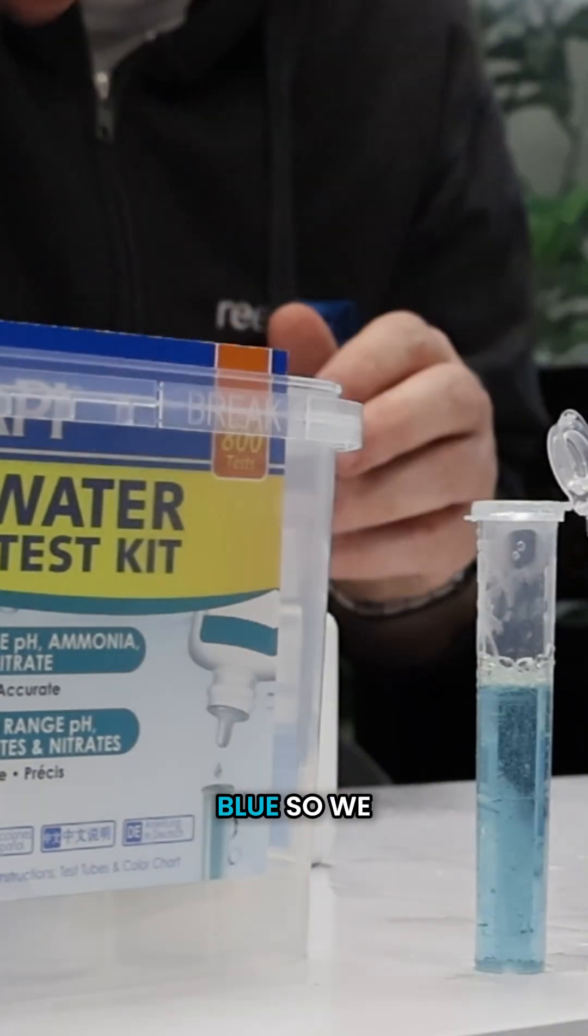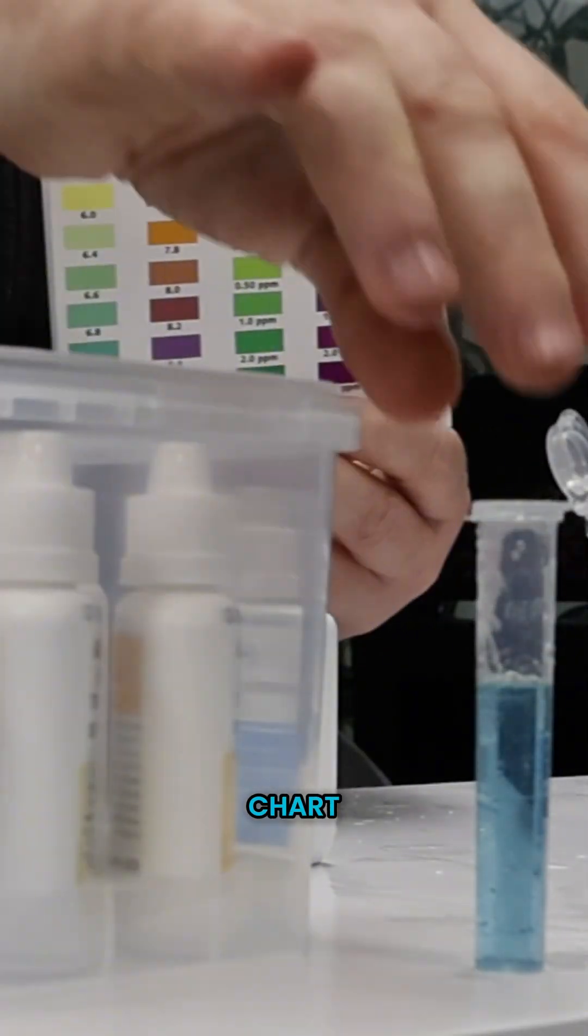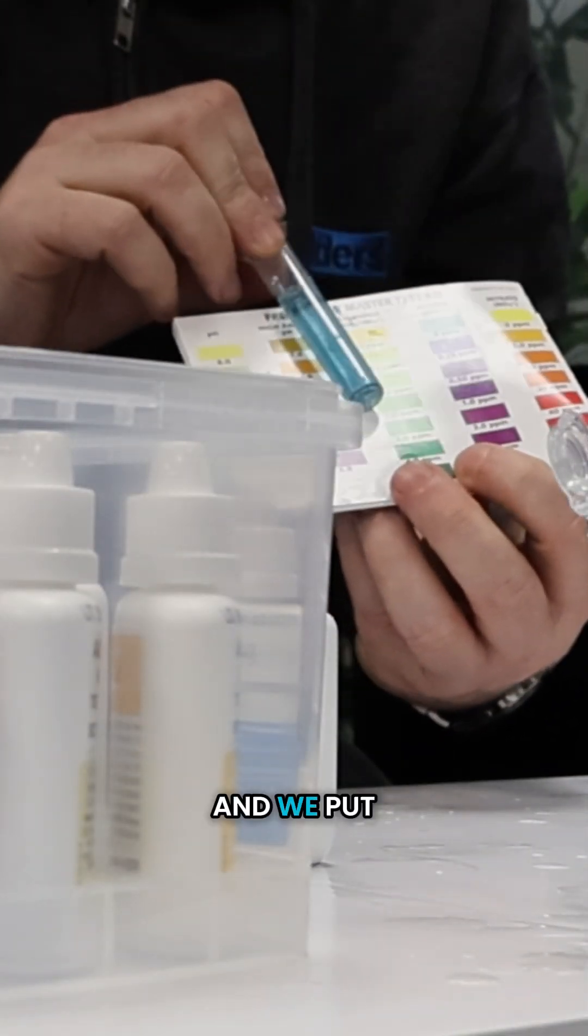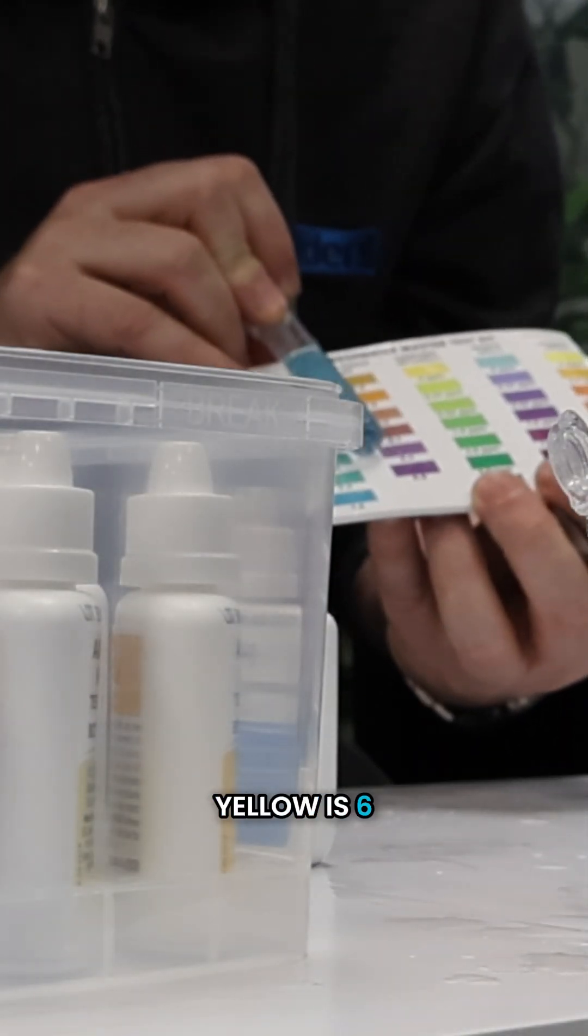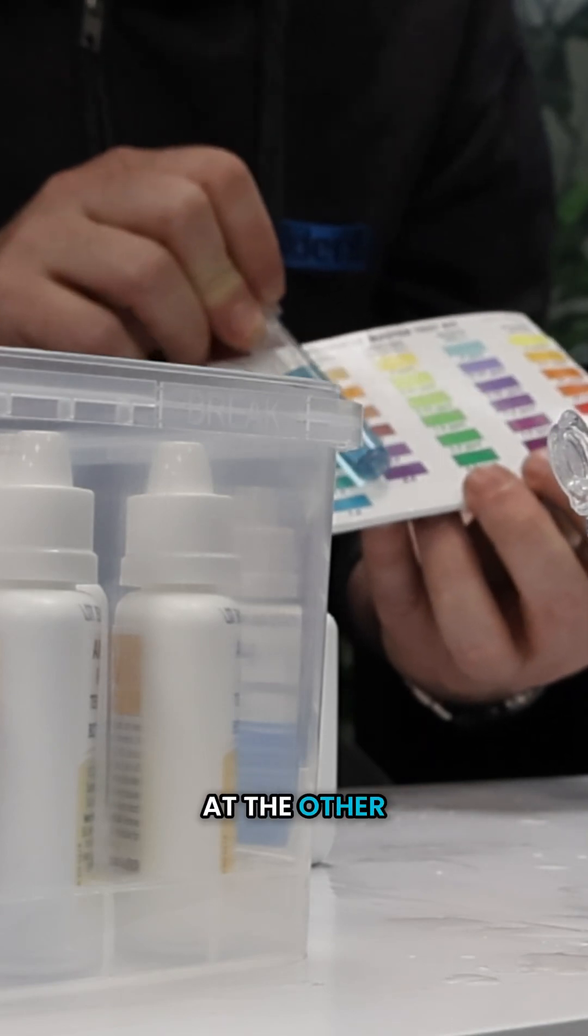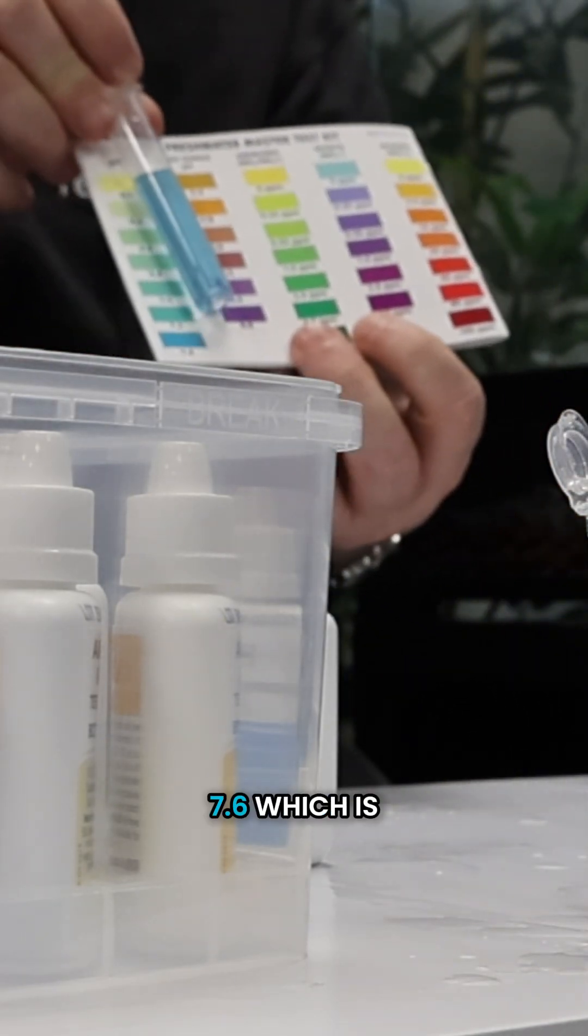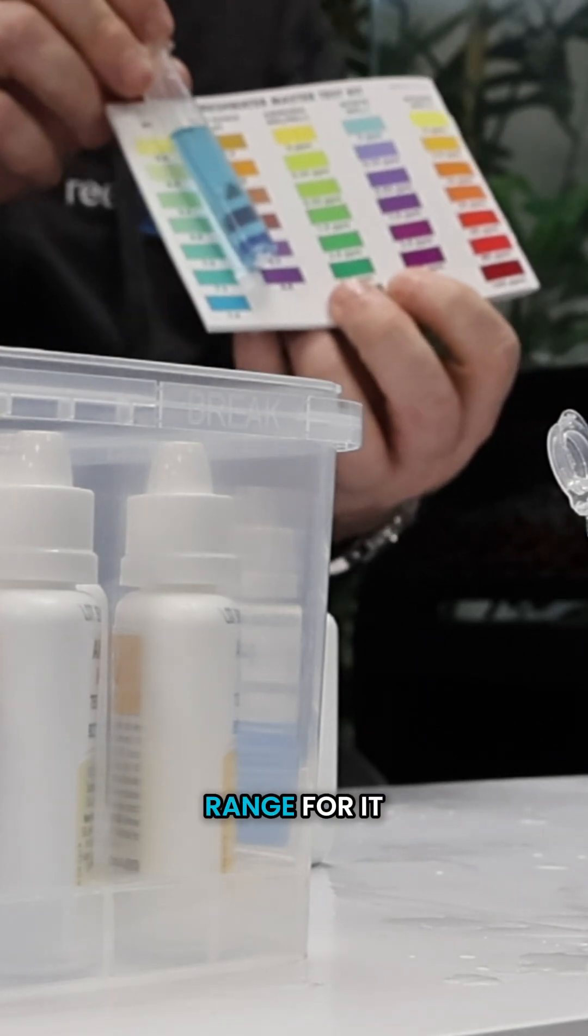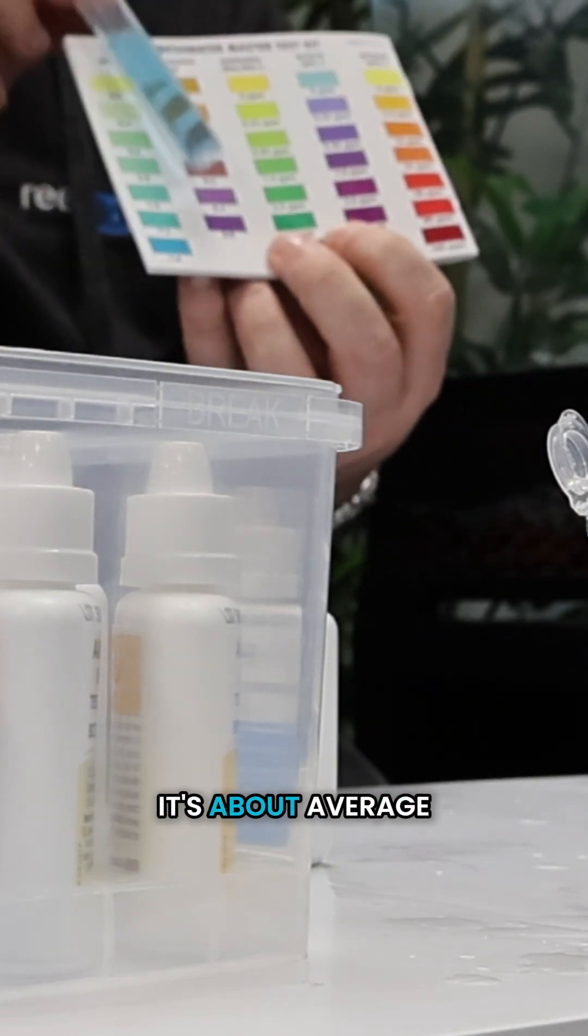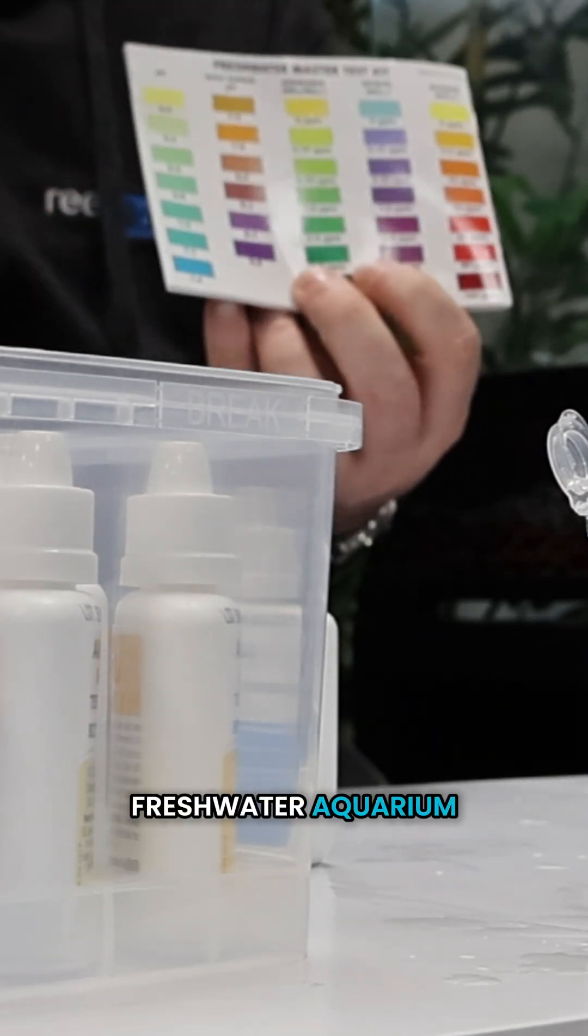And that's turned blue. So we get our color chart and we put it up against our pH reading. Yellow is six, blue is 7.6 at the other end. So we've got a pH of 7.6, which is a good pH to aim for. It means it's got some buffering capacity. It's about average for a UK freshwater aquarium and those platys are going to love it.